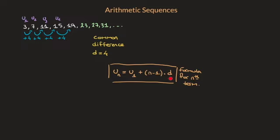The D inside the formula is the common difference — the amount we add to each term to get to the next. For this sequence, D equals 4. Provided we know the first term and the common difference D, we can define the sequence's formula. So for this one, it would be: u sub n equals 3 plus, in parentheses, n minus 1, times 4. And that's this sequence's formula.